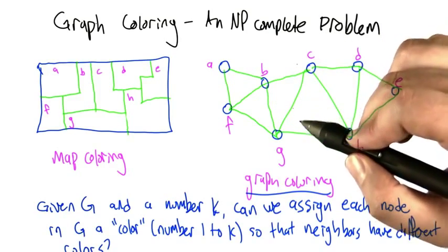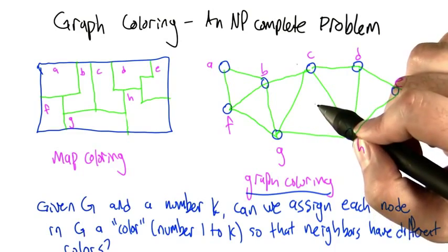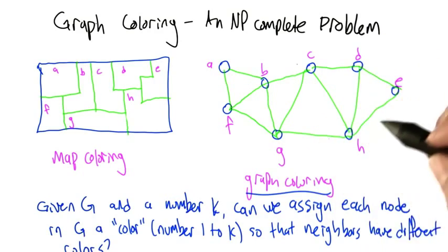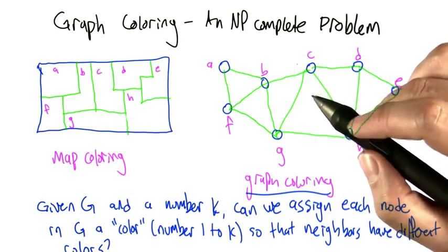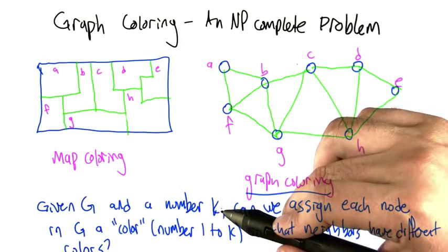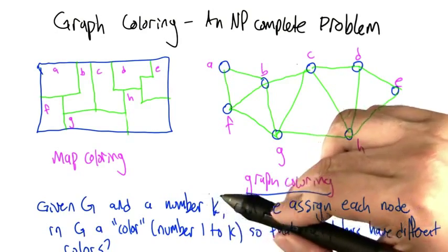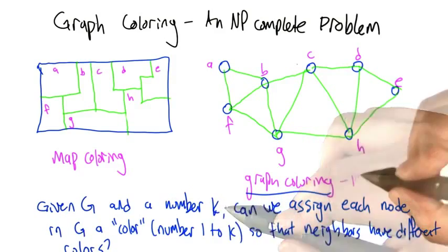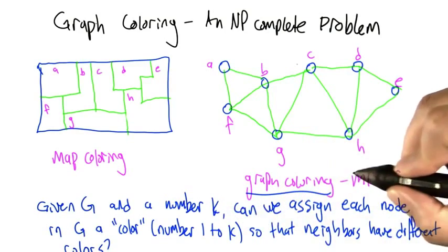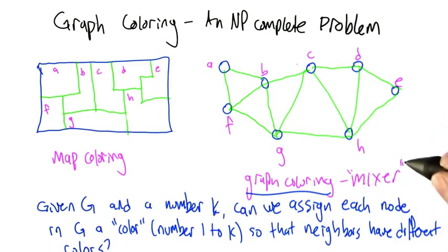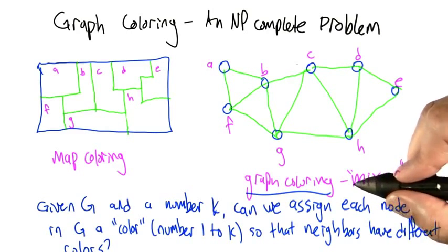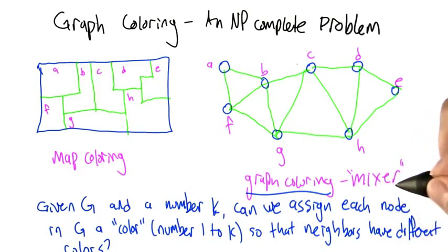And it also comes up in social network problems. You could imagine saying, I've got a group of people, here's their friend network. What I'd like to do is group them into K different groups so that within each group there's no pairwise friends. So you can think of this as building a mixer, like a party where you want to invite your friends, but you want them to interact with people that they aren't already friends with.